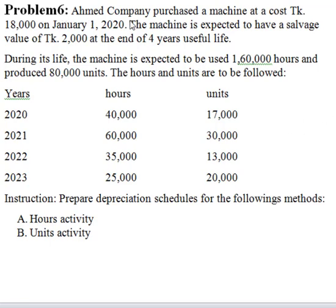Problem 6. Ahmed Company purchased a machine at a cost of 18,000 Taka on 1st January 2020. The machine is expected to have a salvage value of Taka 2,000 at the end of 4 years' useful life. During its life, the machine is expected to use 160,000 hours and produce 80,000 units.